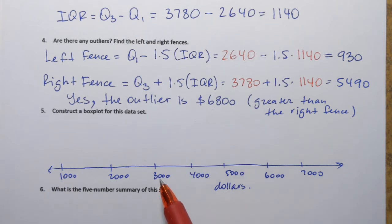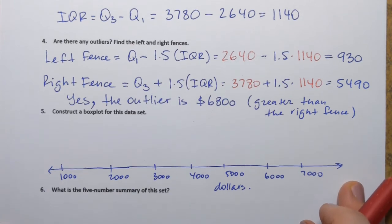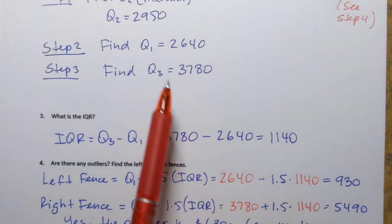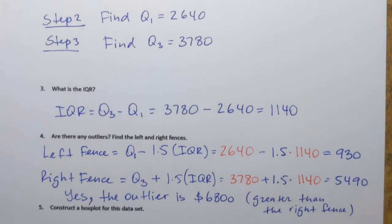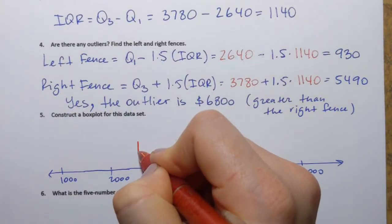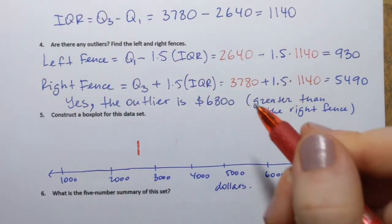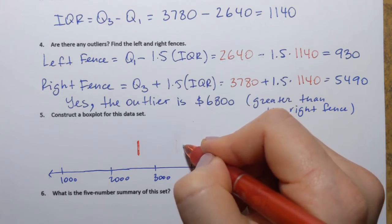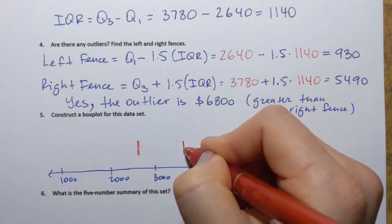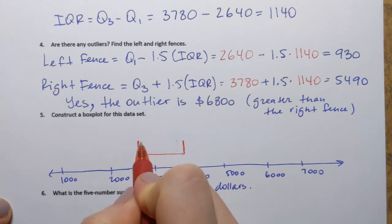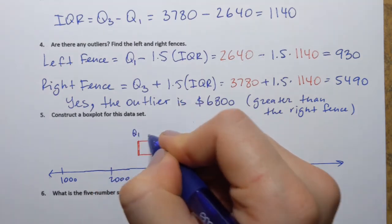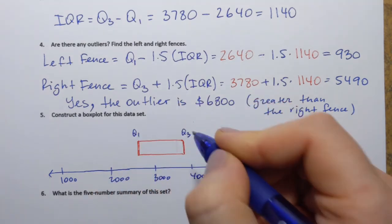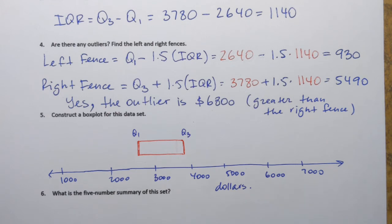So let's start. We're going to start by constructing a box itself. And as you remember, it goes from Q1 to Q3. So Q1 is at 2,640. Q3 is at 3,780. So 2,640 is about over here. And 3,780, it's almost 3,800. I would say somewhere here. So here's the box. Again, for myself, I'm going to denote that it's Q1 and this is Q3. But technically, you don't have to label them on the box plot.